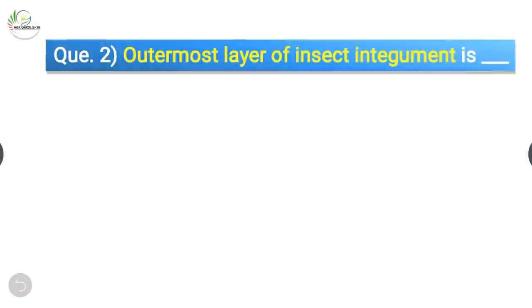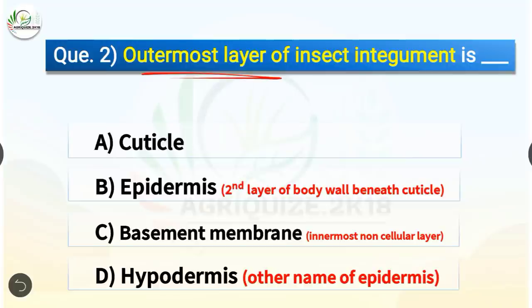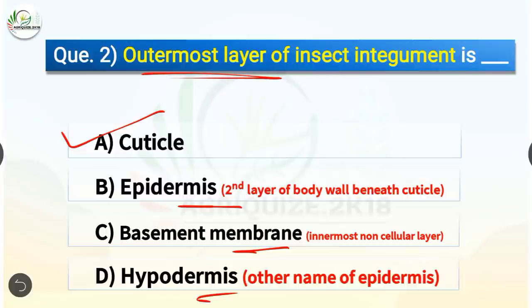Question number 2. The outermost layer of insect integument is which? The options are cuticle, epidermis, basement membrane, or hypodermis. The correct answer is option A, cuticle. The outermost layer of insect integument is cuticle, whereas the second layer beneath the cuticle is the epidermis. The innermost non-cellular layer is the basement membrane, and hypodermis is the other name of epidermis.